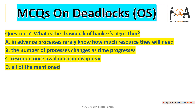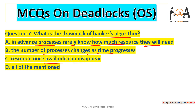Question number seven is: what is the drawback of Banker's algorithm? Option A — in advance, processes rarely know how much resources they will need — is a drawback because if they knew earlier we could avoid deadlocks. Option B — the number of processes changes as time progresses — is also a drawback. Option C — resources once available can also disappear because another process may use them. So option D — all of the above — all are drawbacks of Banker's algorithm.